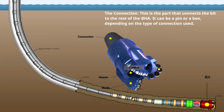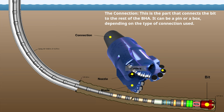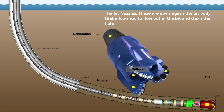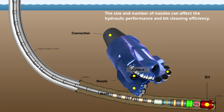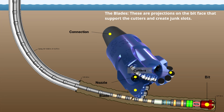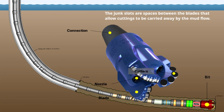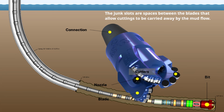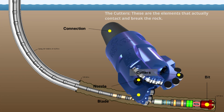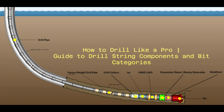The main components of a drill bit are: the connection, which connects the bit to the rest of the BHA and can be a pin or box; the jet nozzles, which are openings in the bit body that allow mud to flow out and clean the hole — the size and number of nozzles can affect hydraulic performance and bit cleaning efficiency; the blades, which are projections on the bit face that support the cutters and create junk slots; the junk slots, which are spaces between the blades that allow cuttings to be carried away by the mud flow; and the cutters, which are the elements that actually contact and break the rock, and can be teeth, inserts, or PDCs depending on the type of bit.